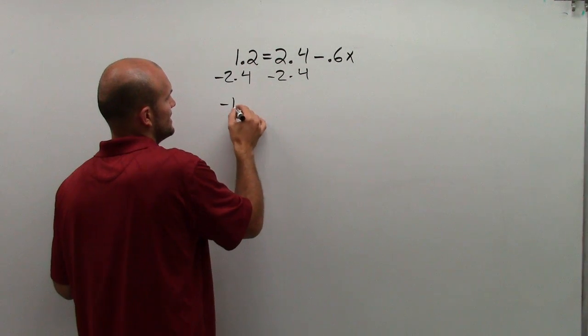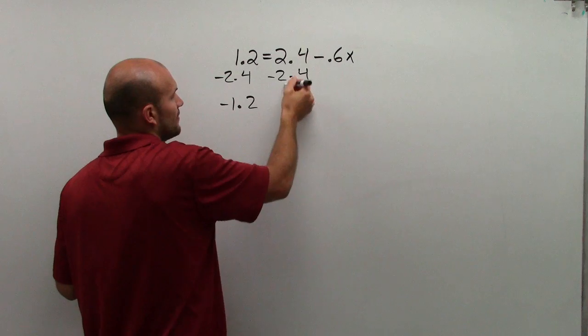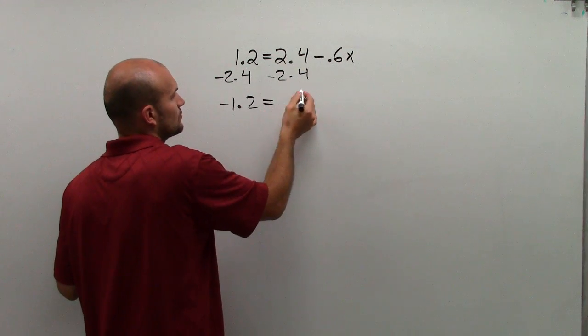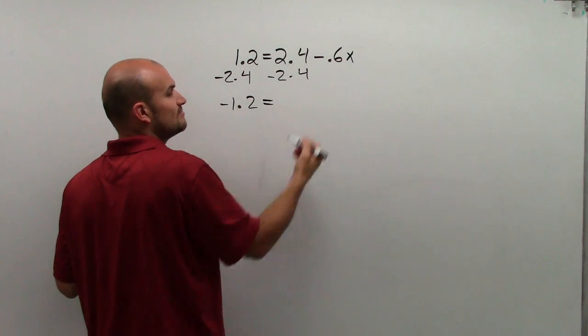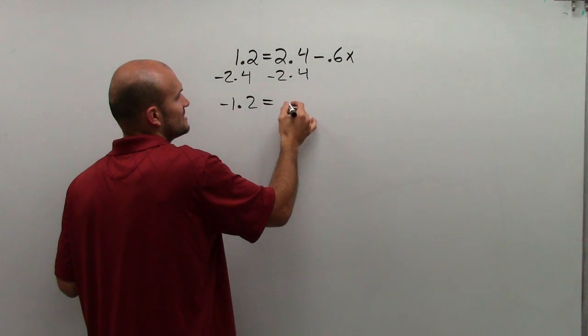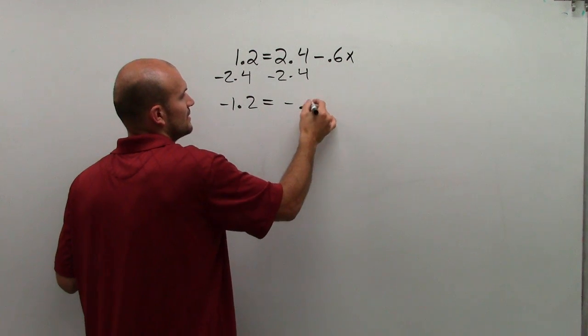1.2 minus 2.4 is negative 1.2. 2.4 minus 2.4 equals 0. 0 minus negative 0.6x is negative 0.6x.